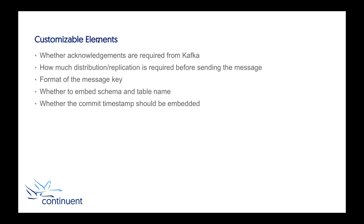In the future we will probably have more options — for example, routing everything in orders to a particular topic, or everything in sales to a different one, with explicit or pattern-based topic naming. These are all things we're hoping customers will tell us they want. We've tried to make the first version as flexible as possible, and with the filtering and renaming capability already built into the replicator, you should be able to determine how you want information distributed across various topics and schemas.